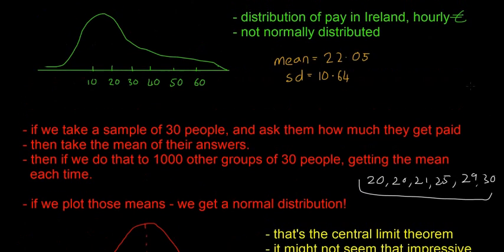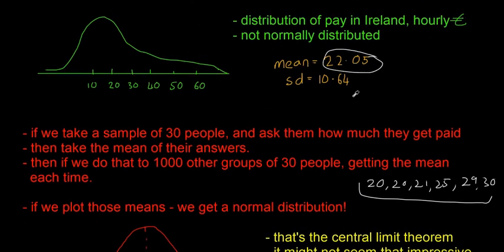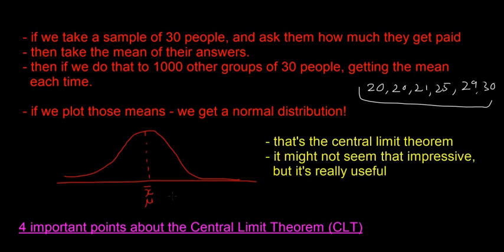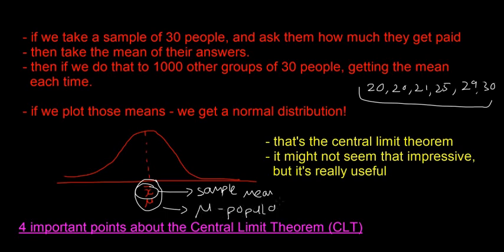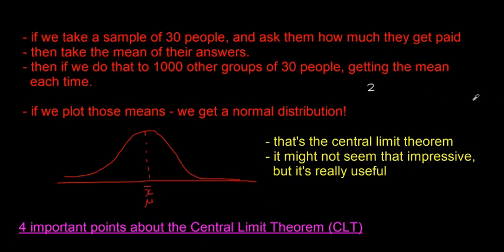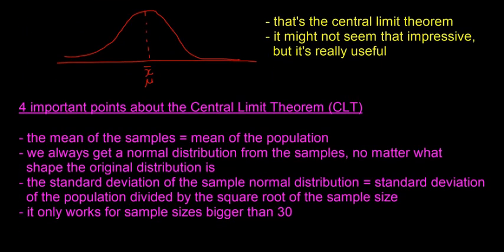That's pretty useful because, say, we didn't know the mean was 22.05 — say you hadn't asked everyone in Ireland what they get paid. Instead of asking the two million people working, you can ask a thousand groups of 30 people — that's 30,000 people — get the means of all their answers, and find the answer. The sample mean X-bar equals mu, the population mean, which is the actual answer. If we don't know the population mean, we can use the central limit theorem to find it.